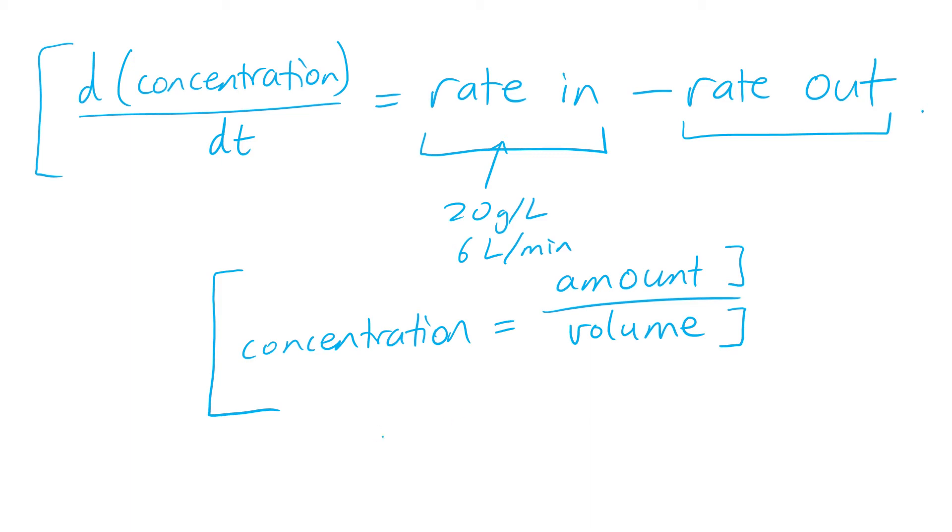And then when you're going from here, you need to multiply that concentration by how much is leaving the tank at a particular time. So if it's leaving at 6 litres per minute, you can multiply it by 6 litres per minute to calculate that rate out.